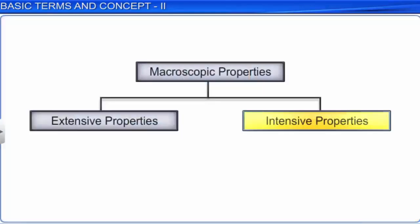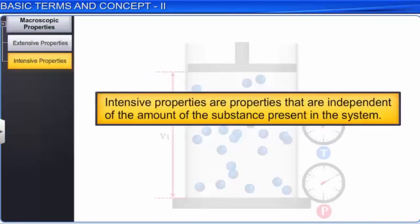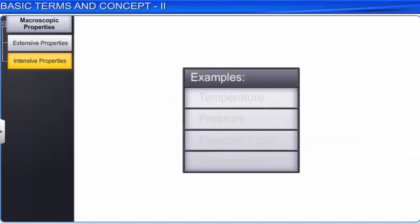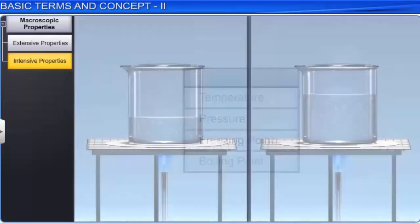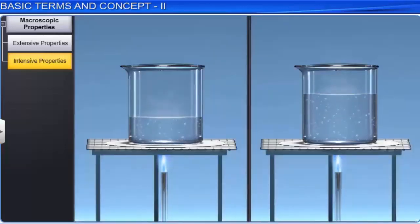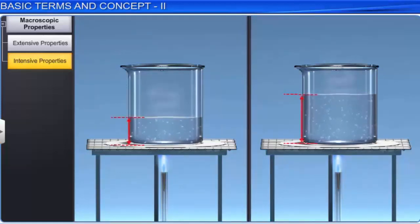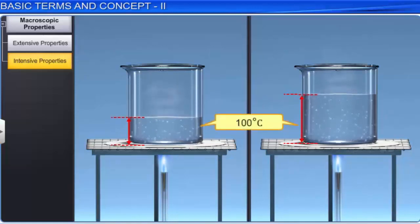Intensive properties are properties that are independent of the amount of the substance present in the system. Some examples of intensive properties are temperature, pressure, freezing point, and boiling point. For example, boiling point is an intensive property because whatever be the quantity of water, it always boils at 100 degrees Celsius.